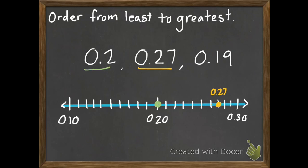And that is my 27 hundredths. And then I'm going to plot the point of 19 hundredths, which is just one spot below 20 hundredths. So there we go. So I have my 3 dots on my number line.